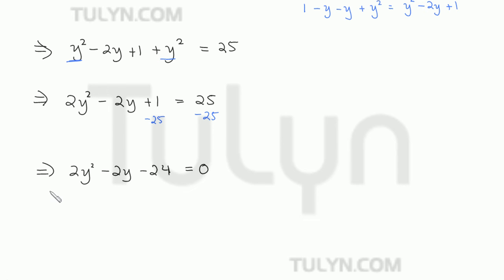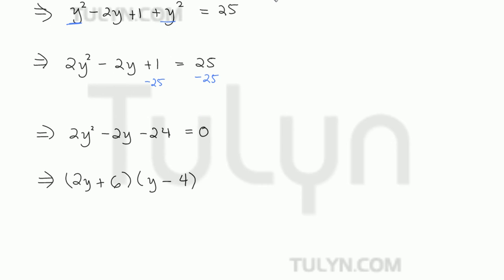So factoring this out, and you can use the quadratic formula if you want, but these actually factor out into, let's see, it's going to be 4 and 6. And so this is going to give us negative and positive. And what I always like to do is check by FOILing these back in. So we get 2y squared is the first term minus 8y plus 6y minus 24, which gives us 2y squared minus 2y minus 24. So that's equal to 0.